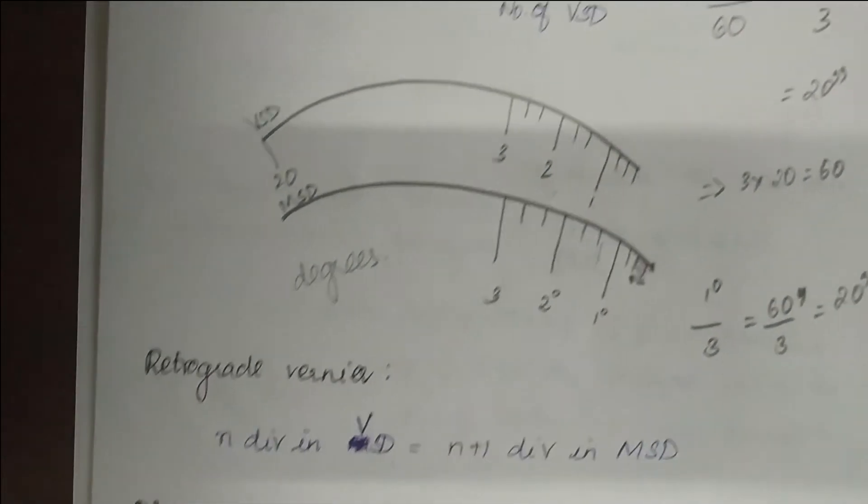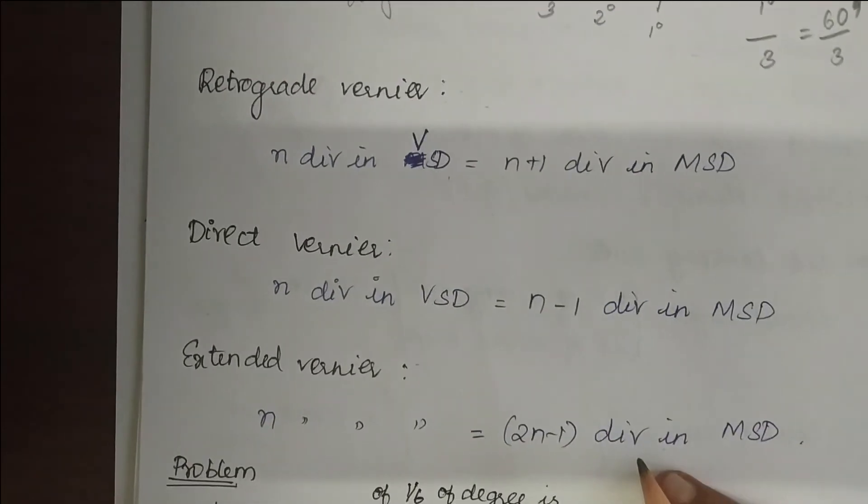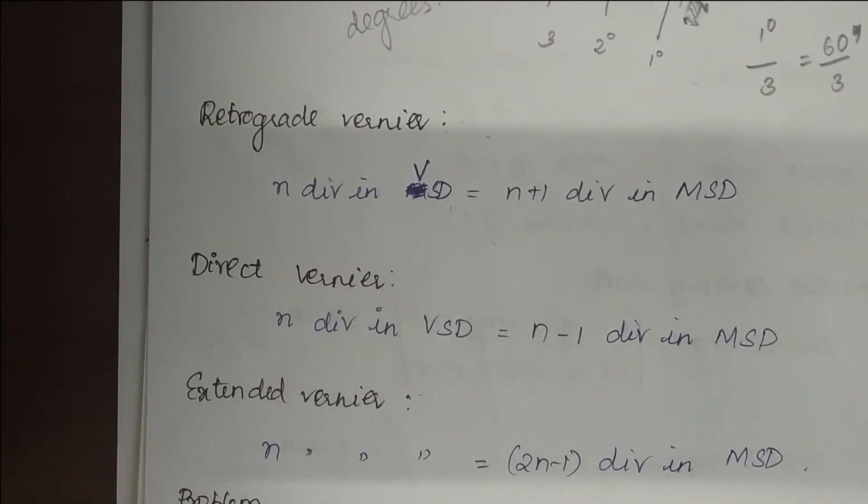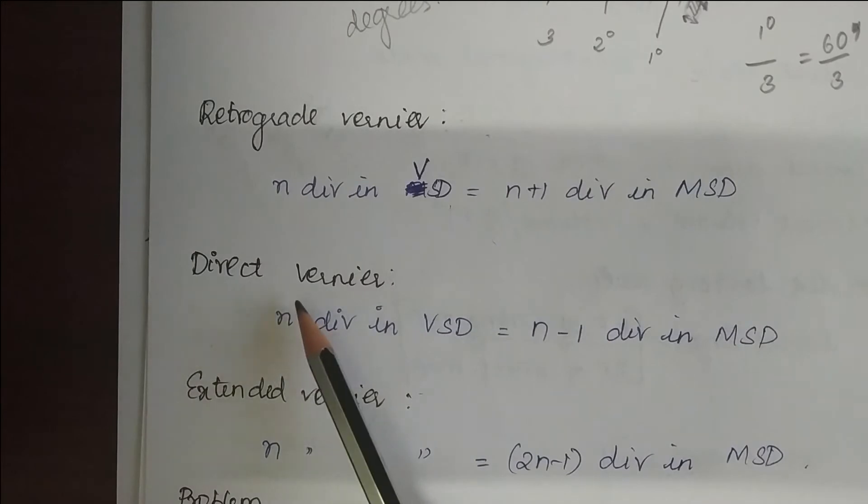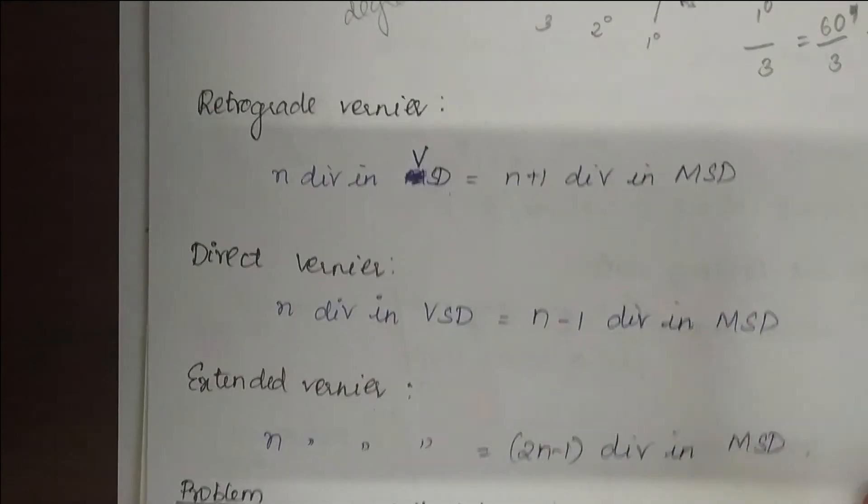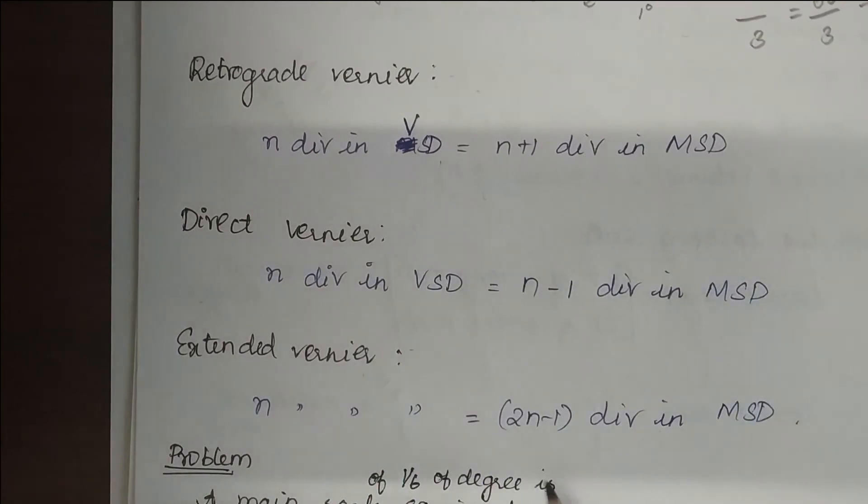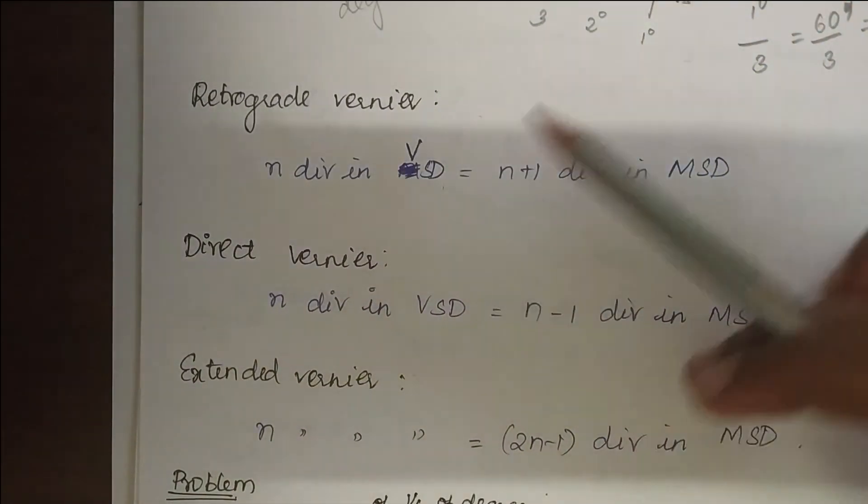There are many types of vernier. The first one is retrograde vernier. In retrograde vernier, n divisions of VSD is equal to n+1 divisions in MSD. Whereas in direct vernier it is n-1 divisions in MSD. And in extended vernier it is 2n-1 divisions in MSD. So these are the types of vernier.